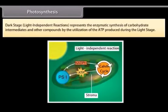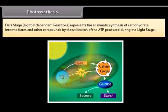Dark stage: light-independent reactions represent the enzymatic synthesis of carbohydrate intermediates and other compounds by the utilization of the ATP produced during the light stage.